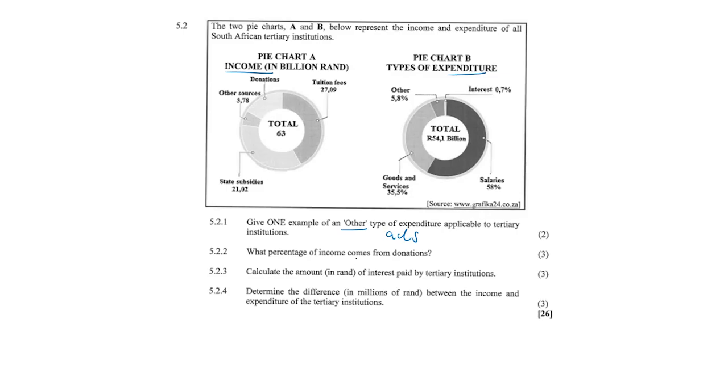5.2.2, what percentage of income comes from donations? So the total here is 63. So we subtract the 27, the 21, and the 3.78. And remember, this isn't billions of rands, okay? It's not baby money here. So the calculation is going to look something like this.